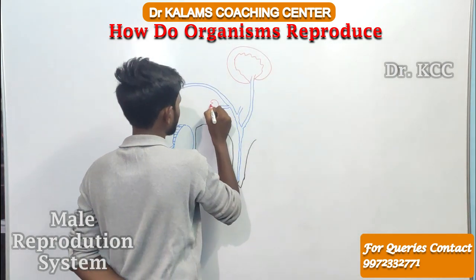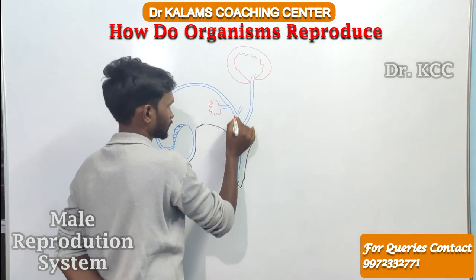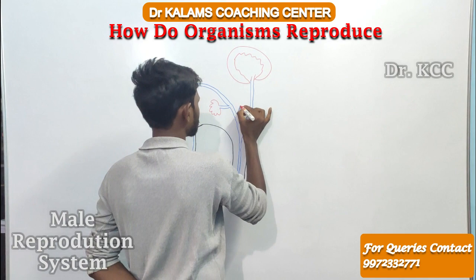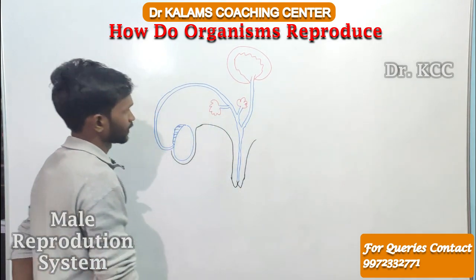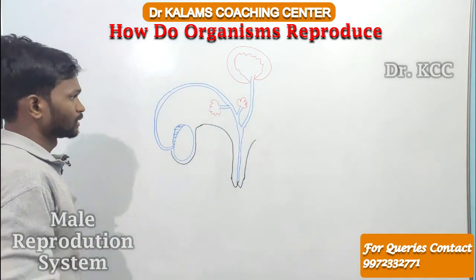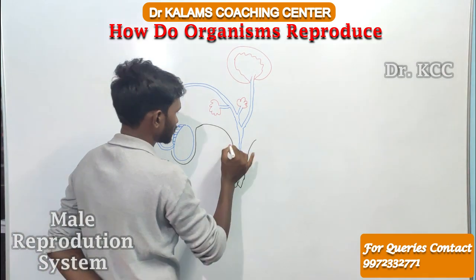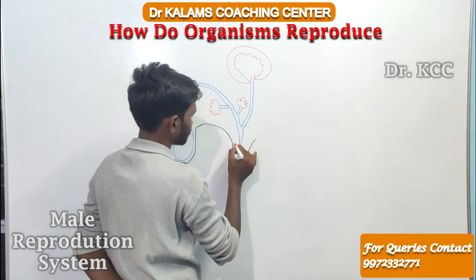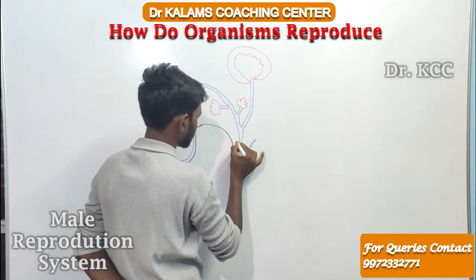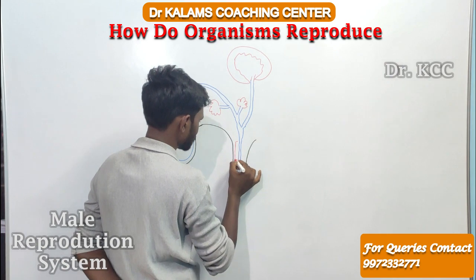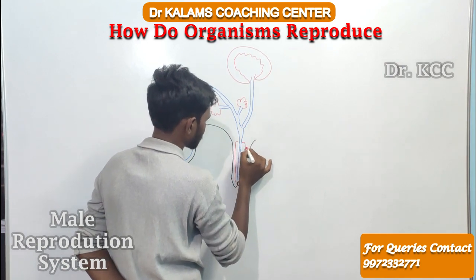That one gland is called the seminal vesicle. This one more gland is called the prostate gland. You can see this decoration — if you're not satisfied with this, you can draw it like this.